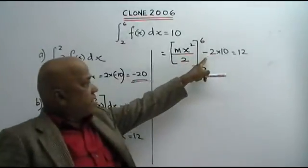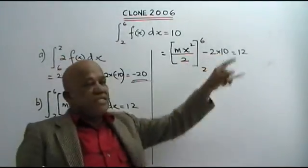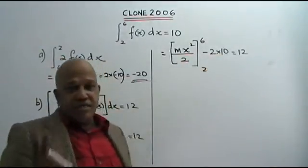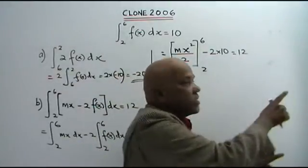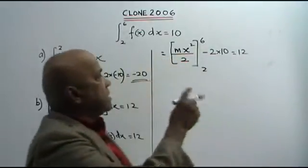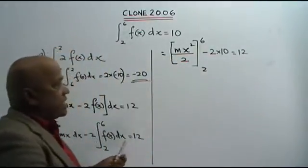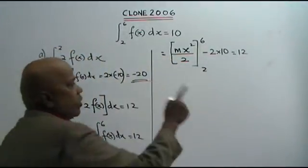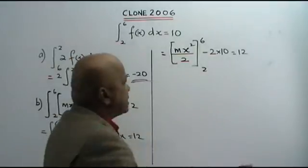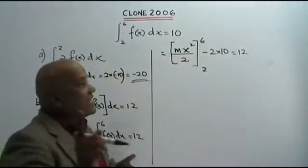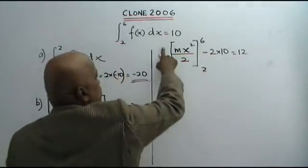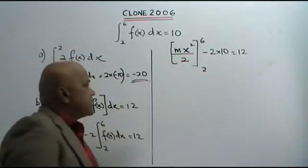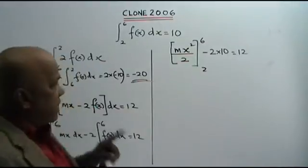We have negative 2 times 10, which is negative 20. Bring negative 20 to the other side — it becomes positive 20. So 12 plus 20 is 32.